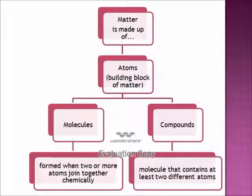Here is our tree map for the second concept of matter. Matter is made up of atoms; atoms are the building block of matter. Atoms can combine to form molecules and compounds. Molecules are formed when two or more atoms join together chemically — they don't have to be different types. For example, oxygen gas is two oxygen atoms bound together, ozone is three oxygen atoms bound together, and hydrogen gas is two hydrogen atoms bound together.